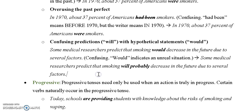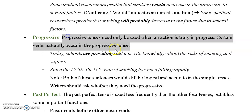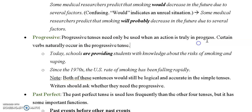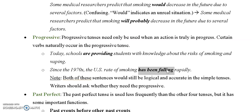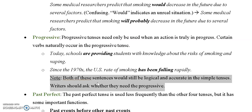A note on progressive tenses: they need only be used when an action is truly in progress. For example: 'Today schools are providing students with knowledge about the risks of smoking and vaping' — that's fine if the writer wants to emphasize it's in progress. 'Since the 1970s, the US rate of smoking has been falling rapidly' — that's also fine. Nevertheless, both of these sentences would still be logical and accurate in the simple tenses: 'provide' and 'has fallen.' Do you need the progressive? It's only for certain circumstances and certain emphasis.